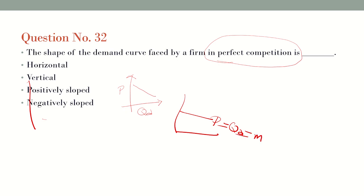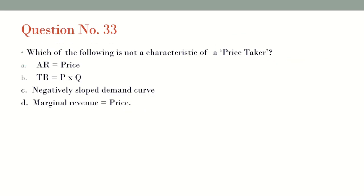In perfect competition, price equals quantity demanded, which is also equal to marginal revenue, which in turn equals average revenue. So one line represents four concepts. The answer for this question is that the shape of the demand curve faced by a firm in perfect competition is always horizontal.